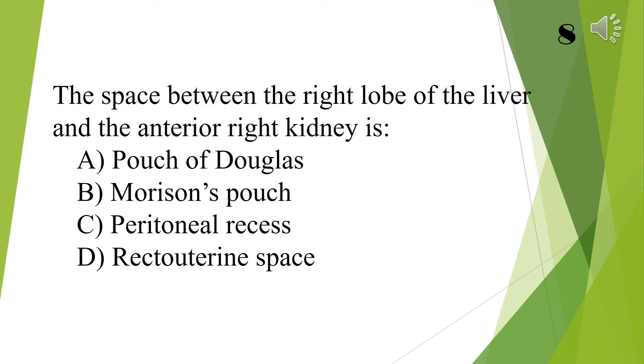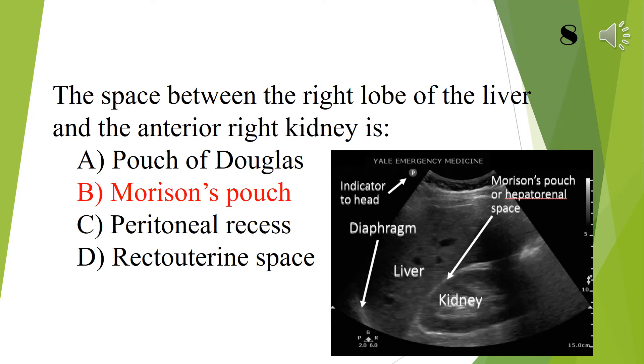The space between the right lobe of the liver and the anterior right kidney is pouch of Douglas, Morrison's pouch, peritoneal recess, or rectouterine space. The answer is Morrison's pouch.